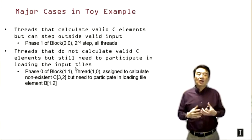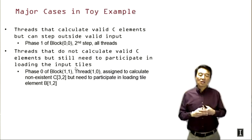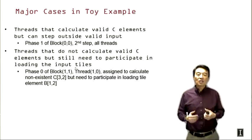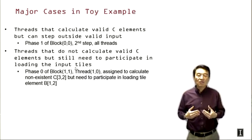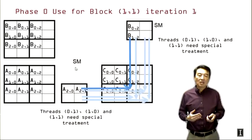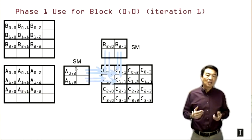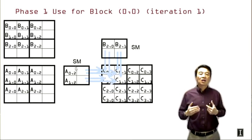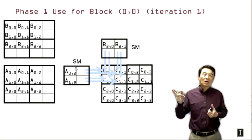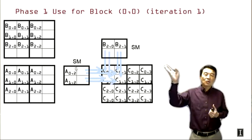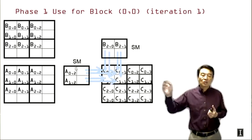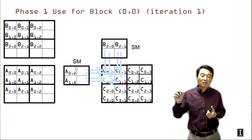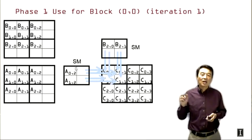So now let me summarize by giving you two major cases that we need to consider when we design our solution. So the first case is that threads that calculate valid C elements can actually step outside valid input values when they do the calculation. So this will be exemplified by iteration one of phase one of block 0,0. So even though all these threads are calculating valid C elements, at some iteration of the calculation loop, we may end up stepping outside the valid range. So in this case, we have exhausted all the valid A and B elements that we loaded from the memory. So we shouldn't let this particular iteration corrupt the final result of these C elements.